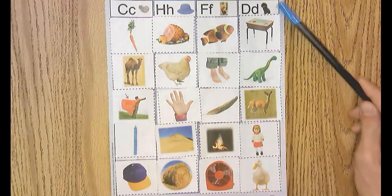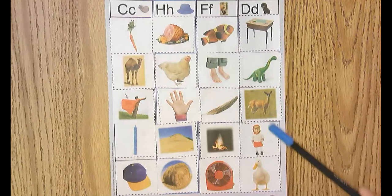In the column d, we have desk, dinosaur, deer, doll, and duck.